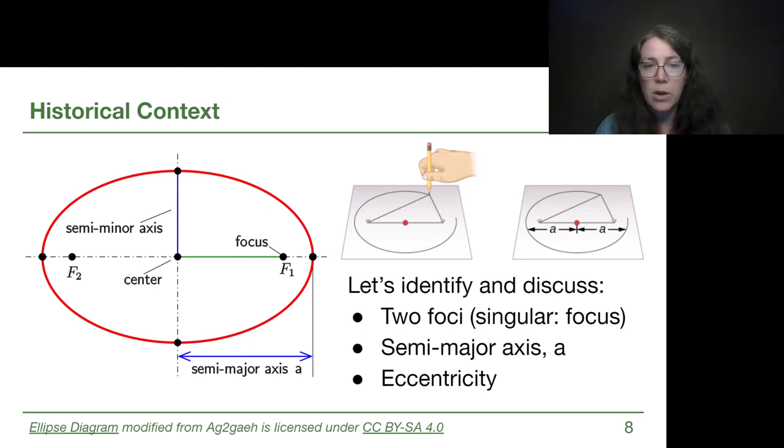So when we think about these different terms, we want to be able to compare them to circles. Focus points are kind of like the center of a circle, but they're different. The semi-major axis is kind of like the radius of a circle, but slightly different. And eccentricity is telling us how far away we are from being a perfect circle.